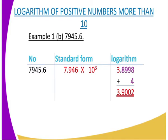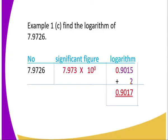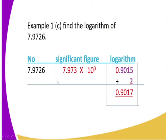Remember, the 3 here is obtained from the standard form, because the standard form was 7.946 times 10 to the power 3, since we rounded off to 4 significant figures. Therefore, 7945.6 rounded off to 4 significant figures gives 7.946, and the logarithm answer becomes 3.9002.